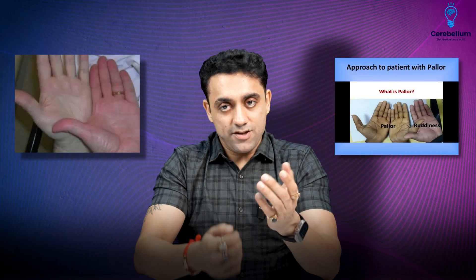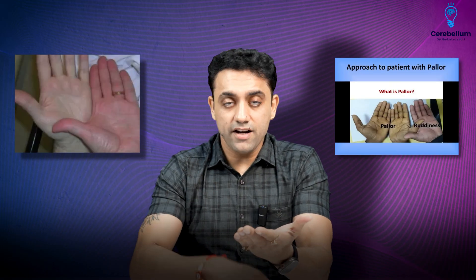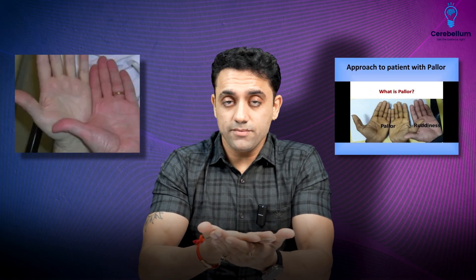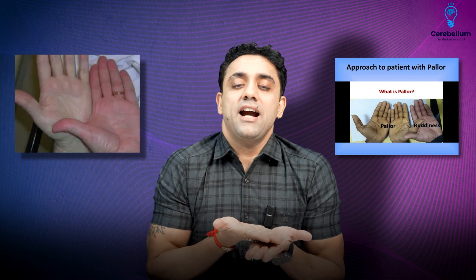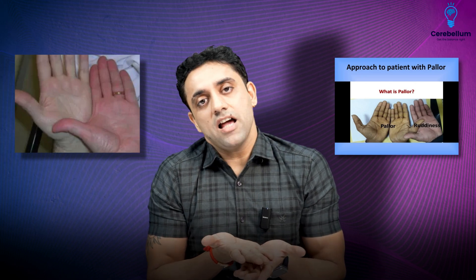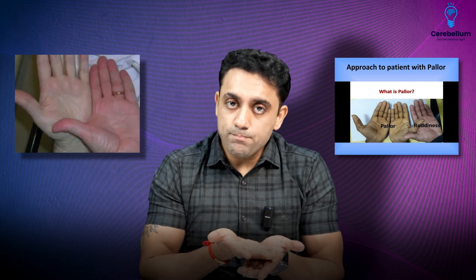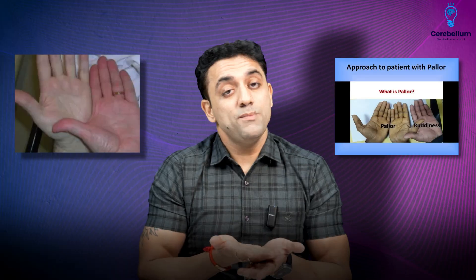One more important thing — you can also look for pallor in the palms. This is the patient's hand and this is the examiner's hand, as you can see in the picture. You compare the patient's hand with the examiner's hand — that is how you look for pallor in the palms. There could be some pallor or there could be severe pallor.